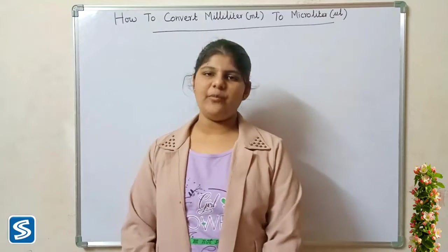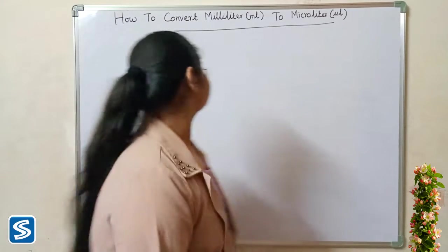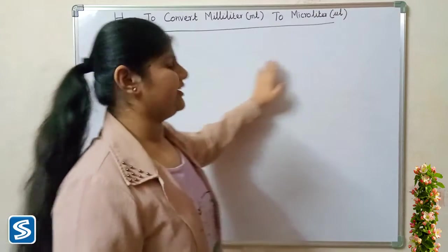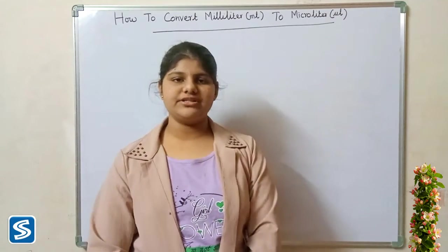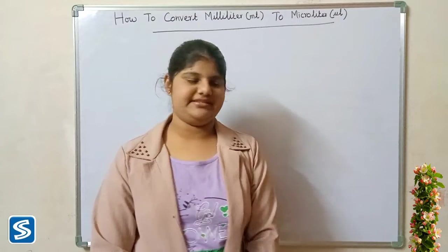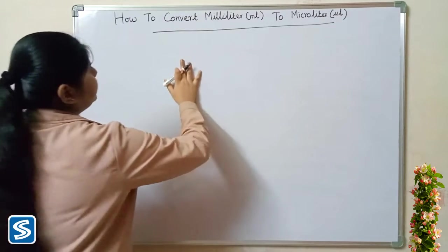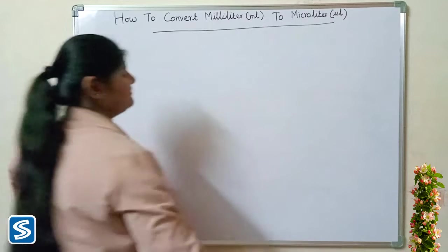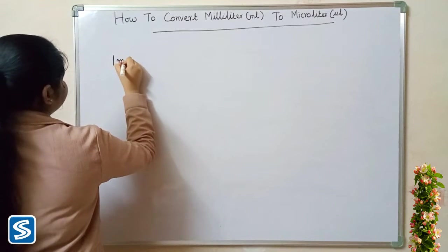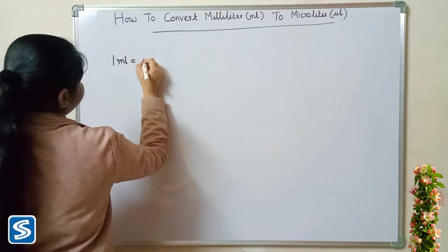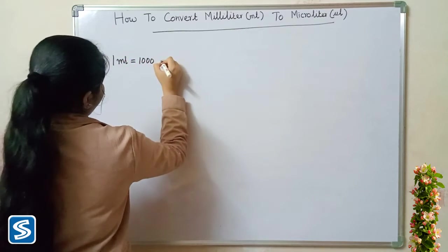Hi friends, welcome to Samish channel. In this video I am going to teach how to convert milliliter into microliter. Milliliter and microliter are the units of volume used in the metric system. To convert milliliter into microliter, we use the formula: one milliliter is equal to one thousand microliters.